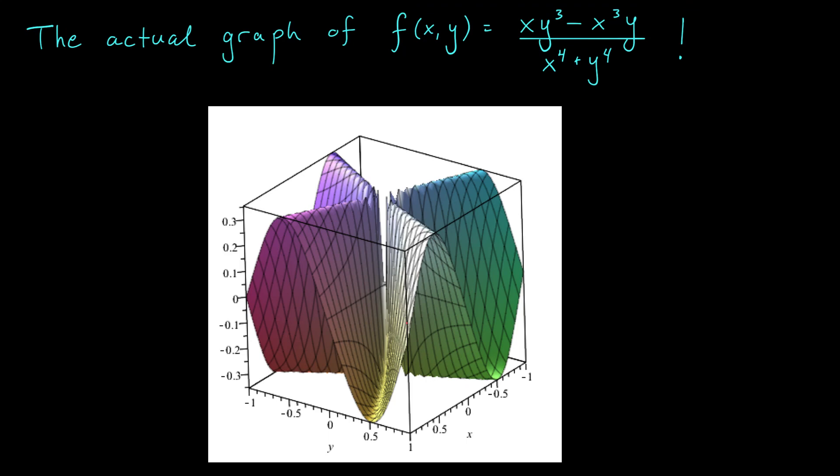To end this example video, I've included the graph of the function we've been talking about. You can see that (0,0), here's 0, here's 0, so (0,0) is the point in the middle. If I approach (0,0) along this line, well, my function is approaching a value of 0. We're coming in along this valley.